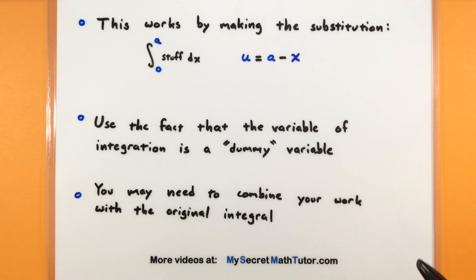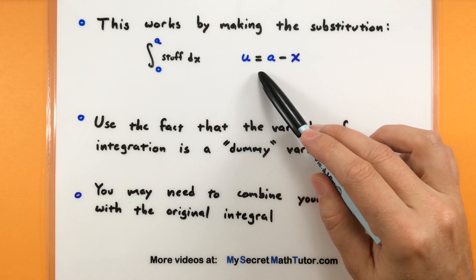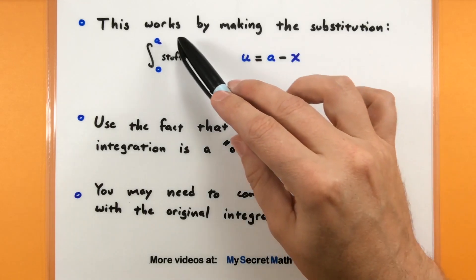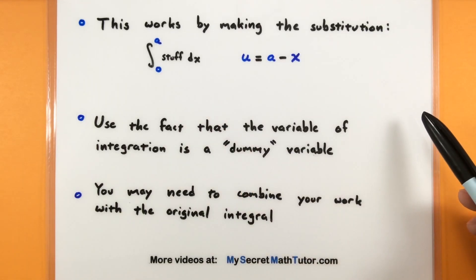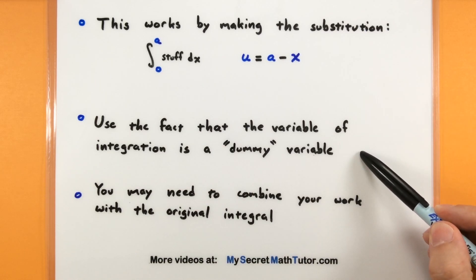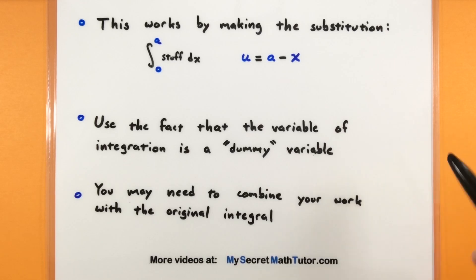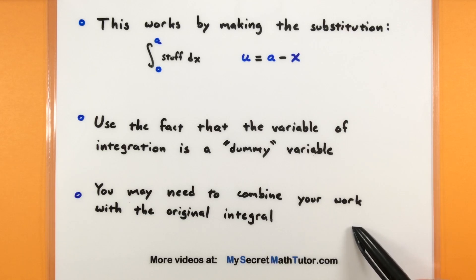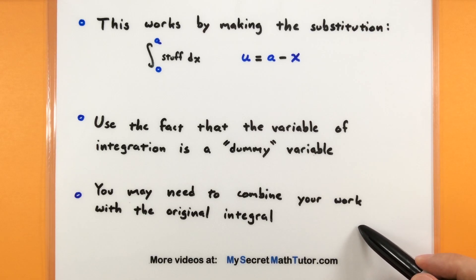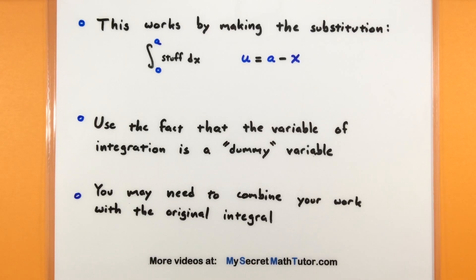When using this technique, you want to make the substitution u equals a minus x, where this a comes from your top bound. It also uses the fact that the variable of integration is really just a dummy variable. So watch for when I get to the examples how I switch things all the way back to x — it doesn't feel like you should be allowed to do that, but you can. Lastly, you may need to combine your work with the original integral. I'll often keep track of the original integral by using a capital I.